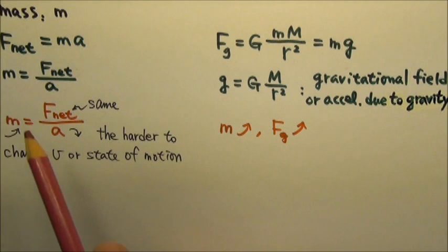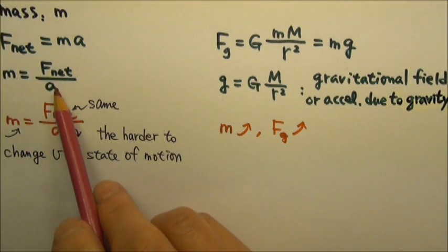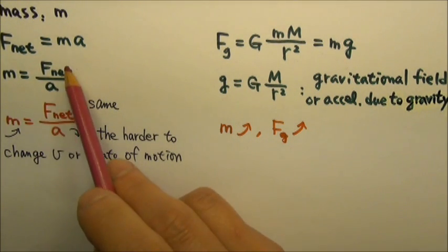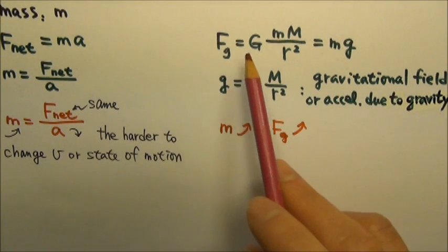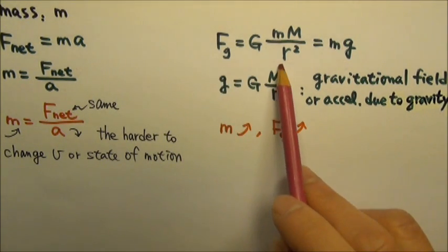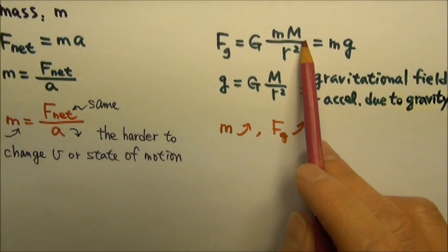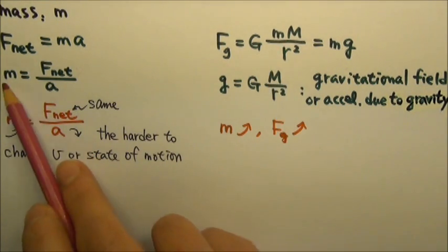Here's the puzzle. How come the property that determines how an object accelerates in response to forces also determines the strength of the gravitational attractive force between objects? They don't seem to be the same properties.